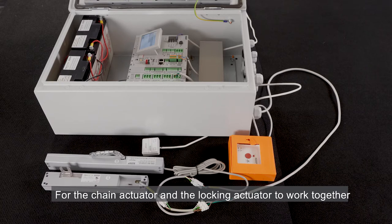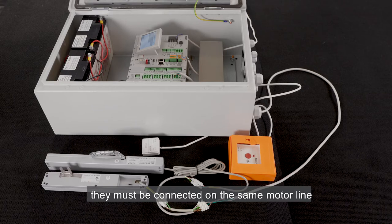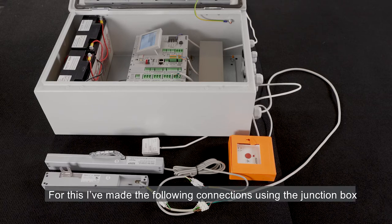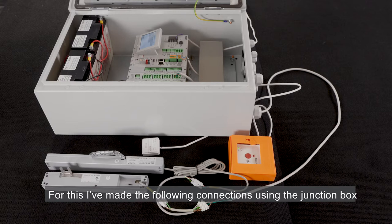For the chain actuator and the locking actuator to work together, they must be connected on the same motor line. For this I've made the following connections using the junction box.